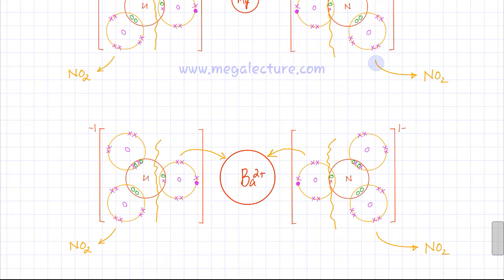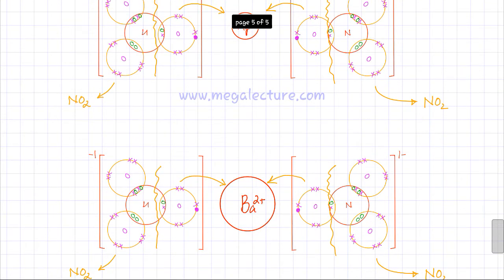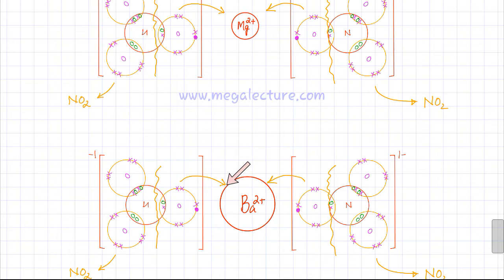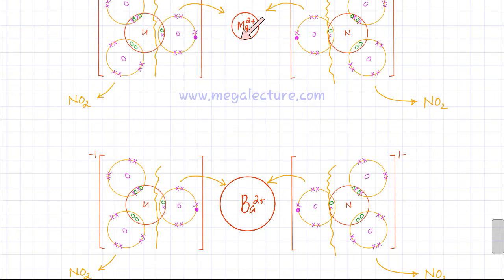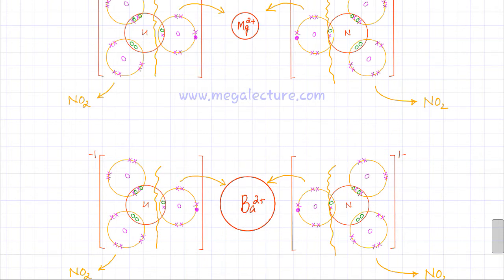The first thing to notice is that the magnesium ion is much smaller — it has a smaller ionic radius — whereas barium ions are much bigger in size. Because of the smaller ionic radius, the 2+ charge on Mg²⁺ is more effective; the charge density is higher. For Ba²⁺, the charge density is lower because the 2+ charge is spread over a much bigger region, making it less effective.